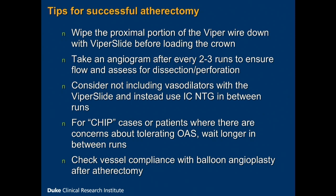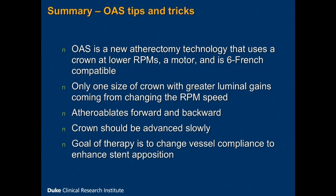Now, there are CHIP cases where there are concerns about tolerating any kind of atherectomy. In these cases, just wait longer in between runs. Our standard approach is to wait one minute between runs; sometimes we'll wait up to three minutes to reestablish flow and make sure the patient is stable. I tend to check vessel compliance with balloon angioplasty after atherectomy to make sure I don't need to do additional runs and that I get full stent expansion. In summary, OAS is not so new anymore, but it is an atherectomy technology that uses a crown at lower RPMs, a motor, and a six-French-compatible system with only one crown size. For greater luminal gains, do more ablations or increase RPM to 120,000. Atheroablation occurs both forward and backwards — advance the crown very, very slowly. The goal is not just to cross the lesion, but to change vessel compliance to enhance stent apposition.